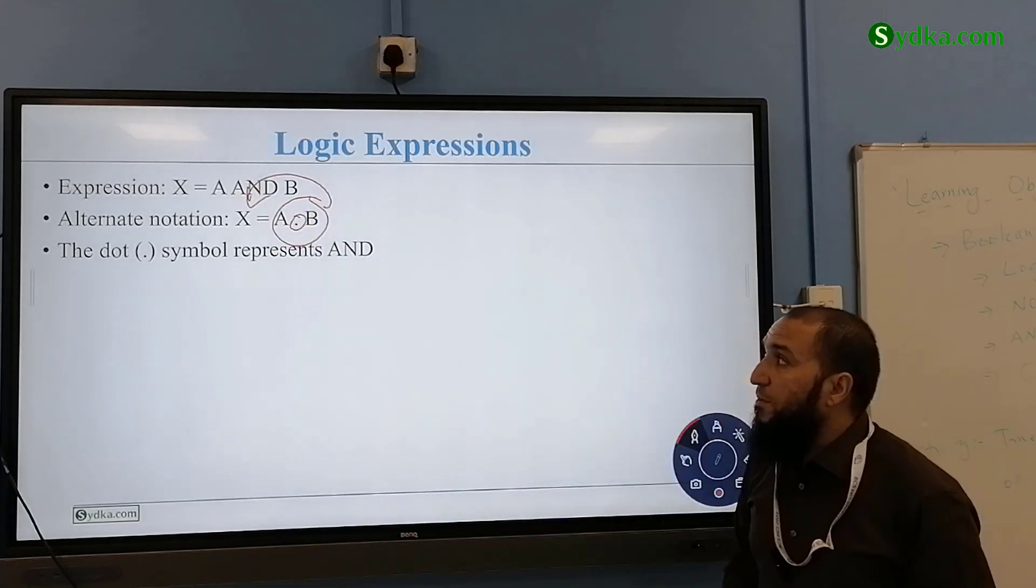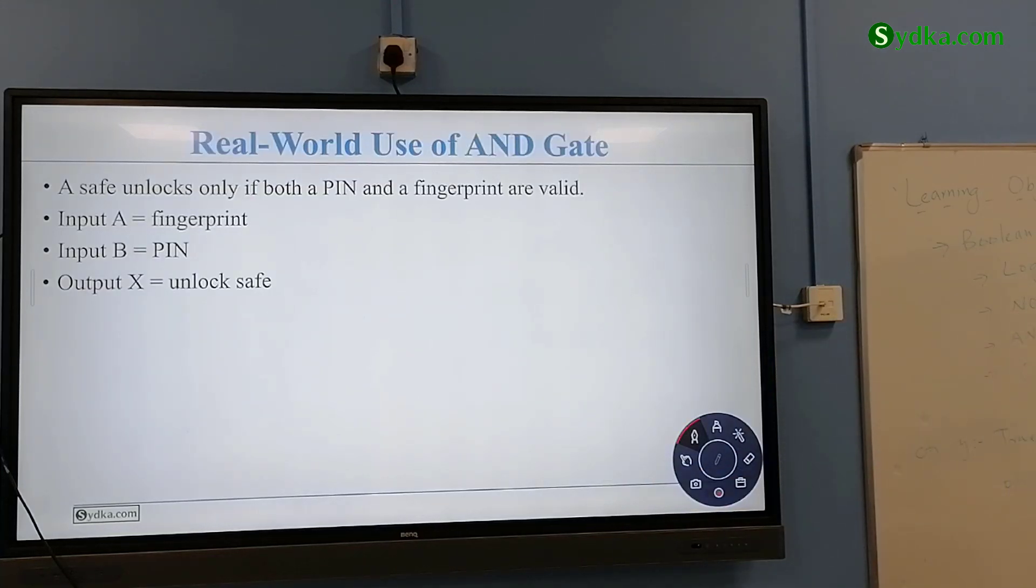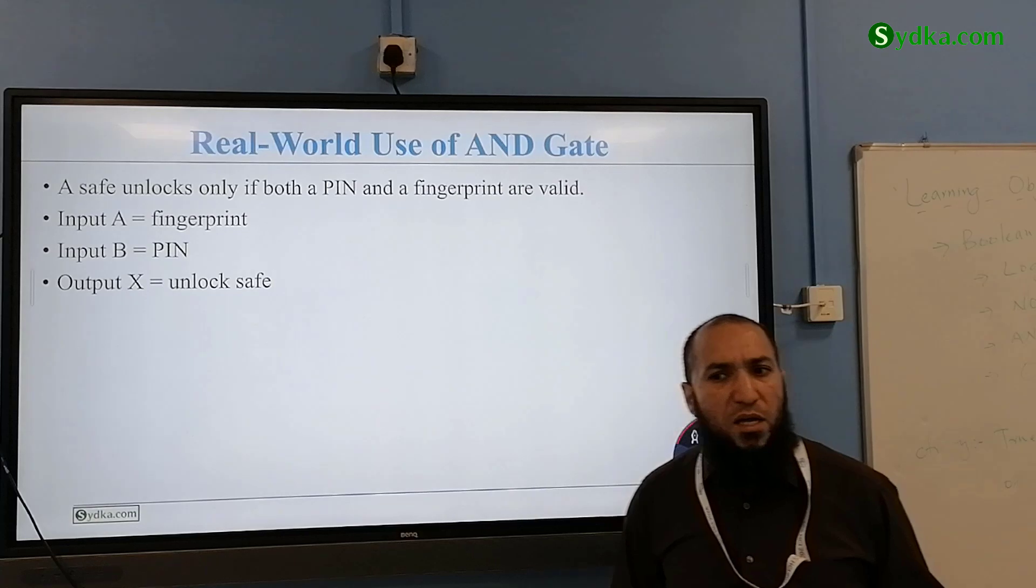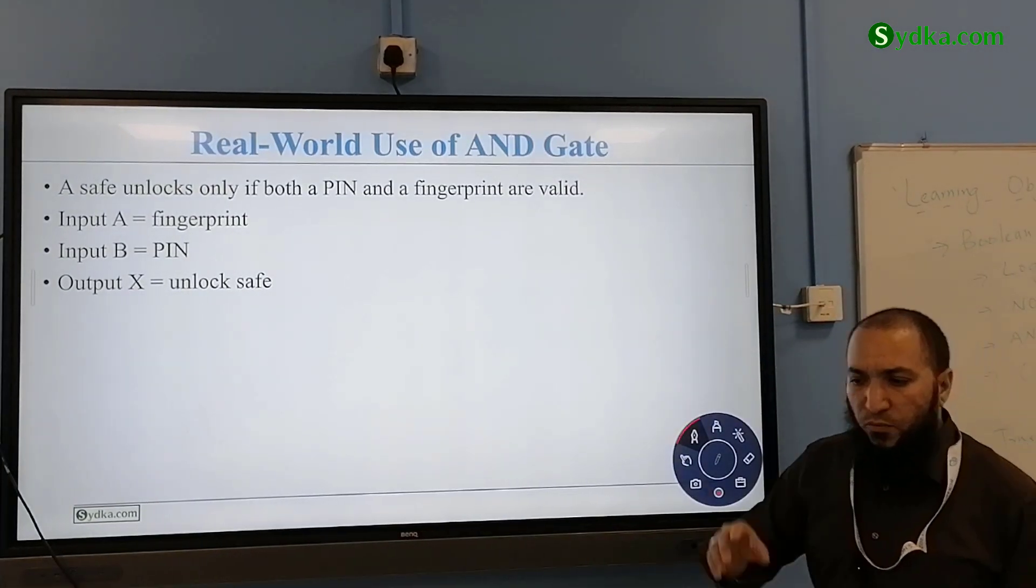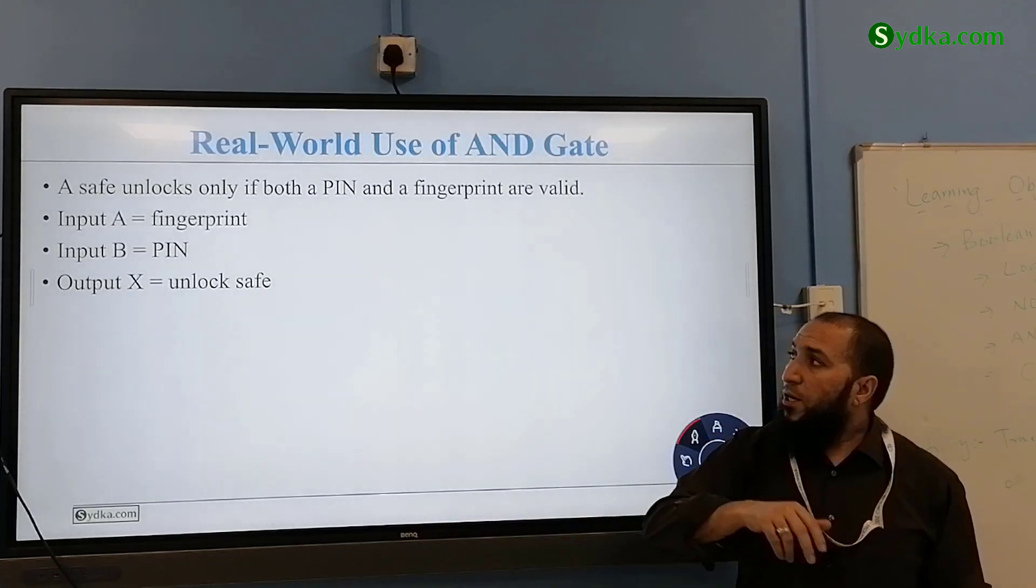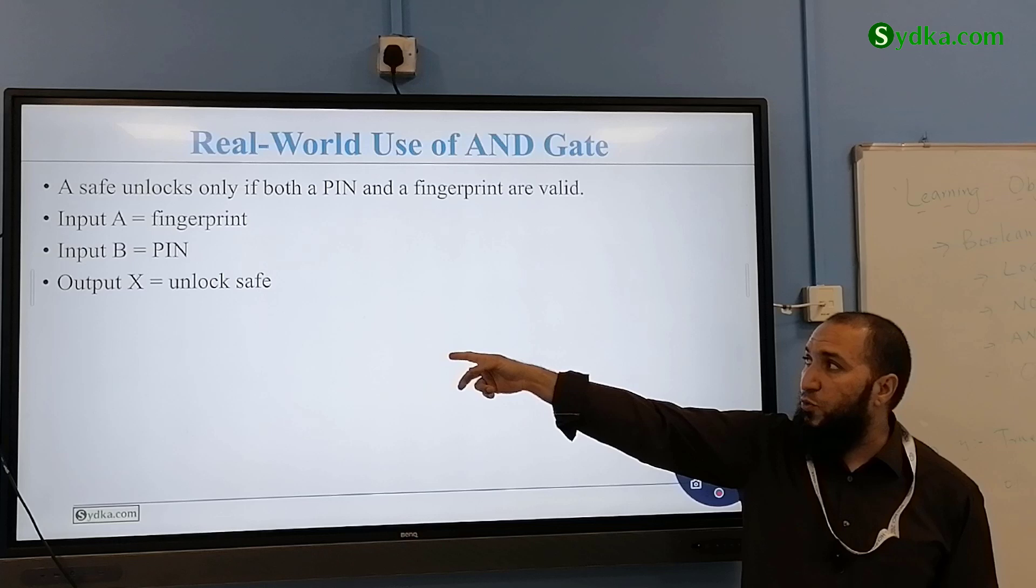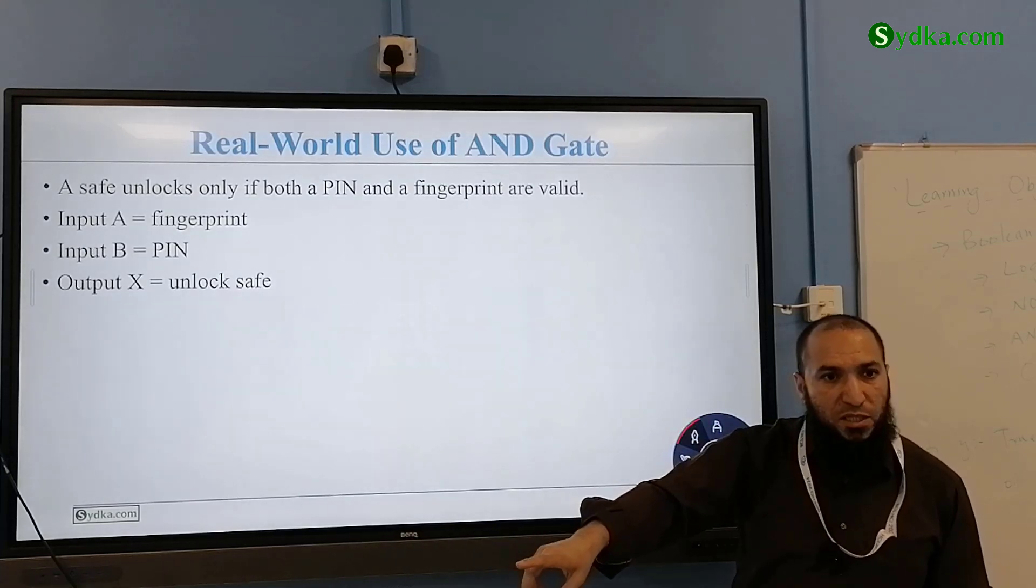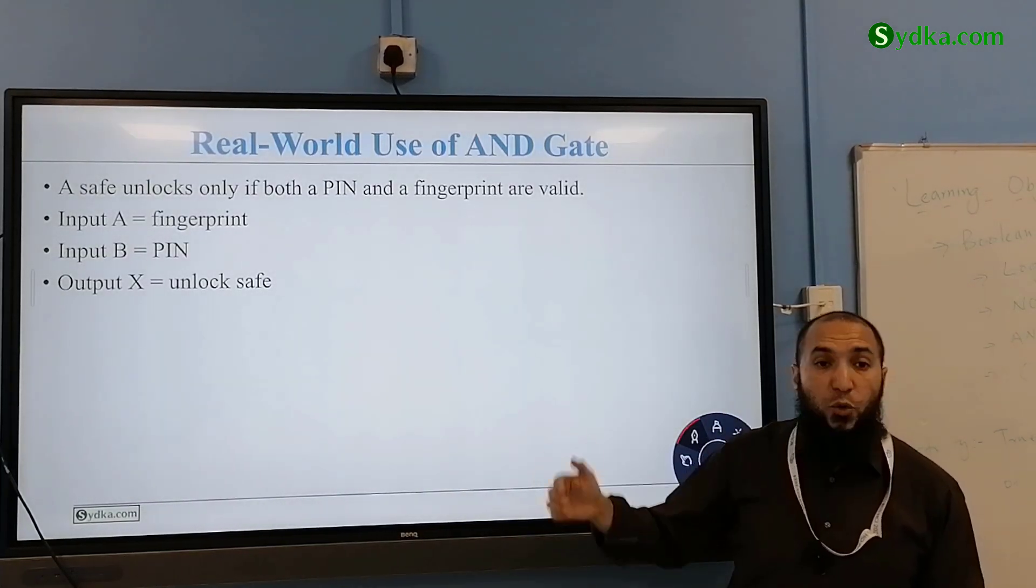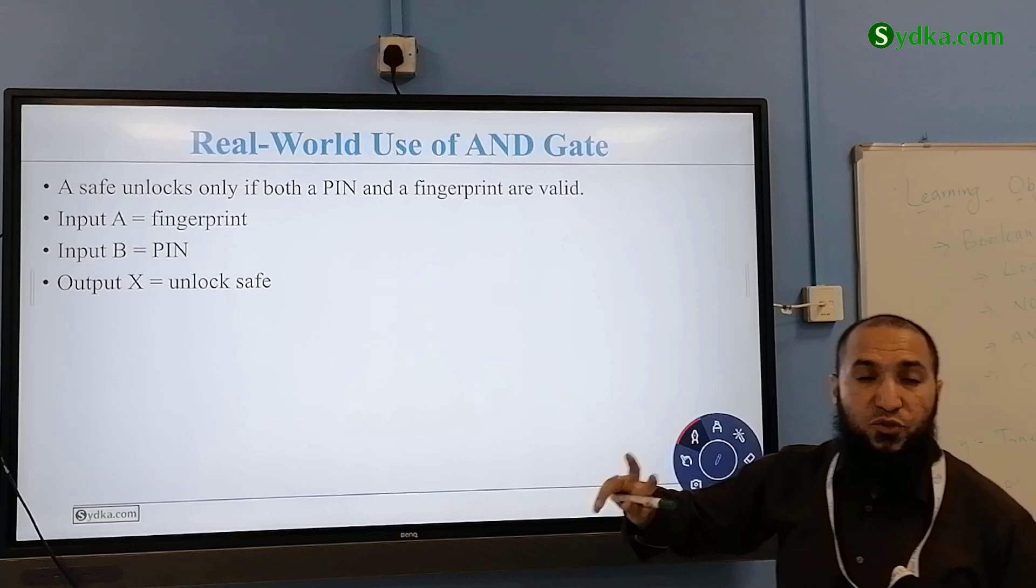A safe unlocks, for example. We use two-step authenticators. We put username, we could use email address, and then you put password, then we get a notification to do two-step authentication as well. So that is in a way implementing this. You have to have password as one step and you have to have two-step authentication. If both are true, you put it successfully, you will go inside into your email, otherwise not.